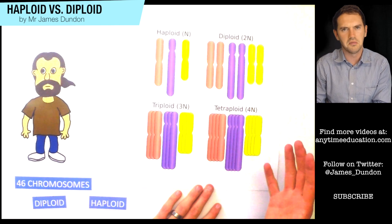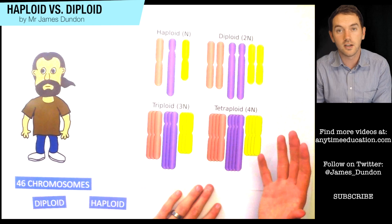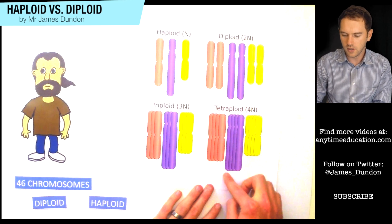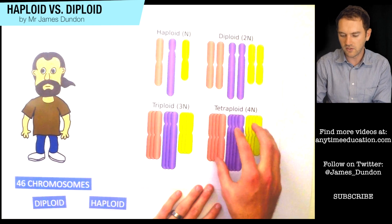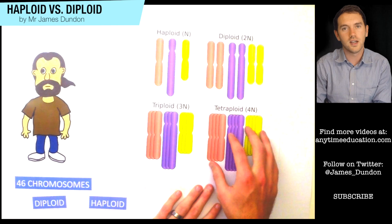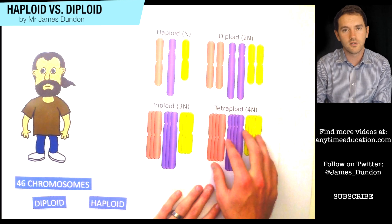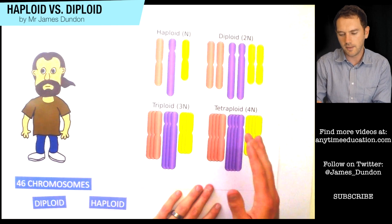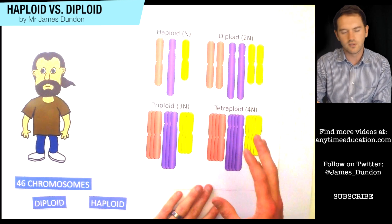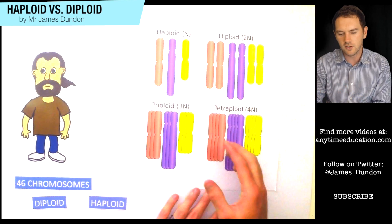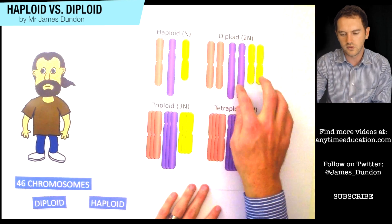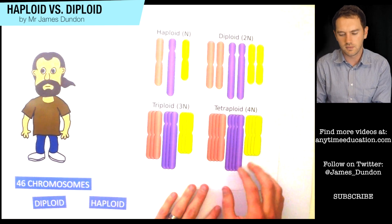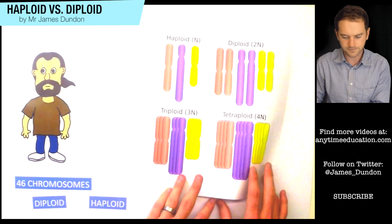You might be thinking, surely those don't occur in humans — but they do. Tetraploid sets of chromosomes actually occur a lot in heart cells for babies and children, and it slowly changes back to our more diploid scenario as we grow older. So that's a pretty interesting little fact.